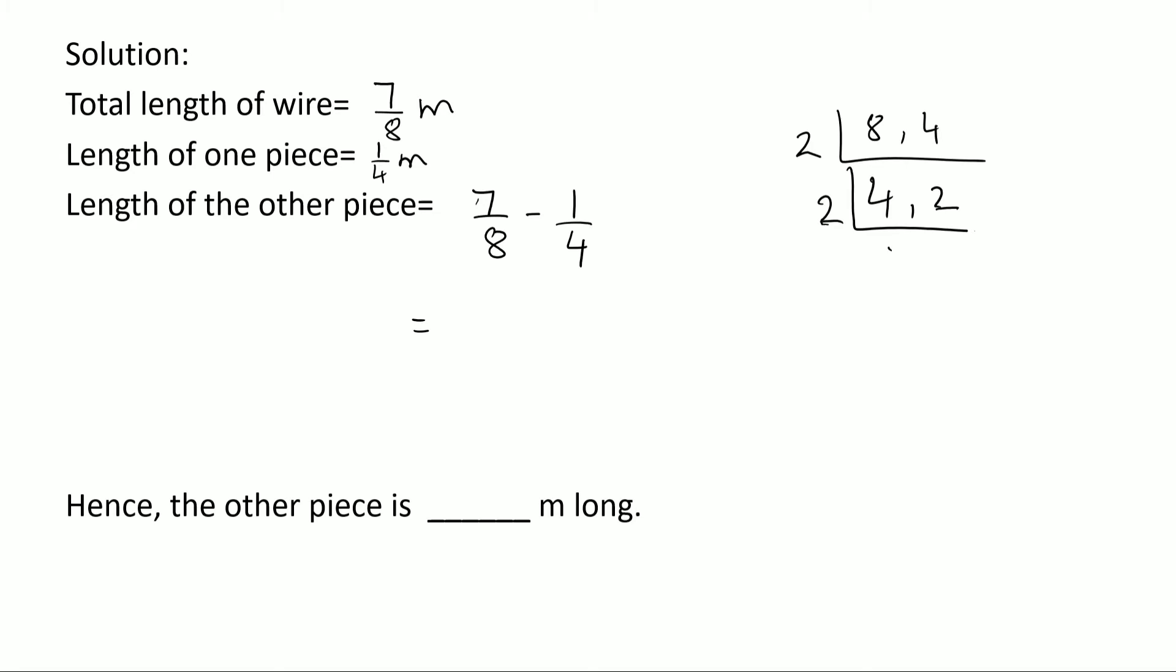2, 1 by 2, and then 2, 1 by 2, 1. So multiply all these: 2 times 4 is 8. 8 is the LCM. Now 7/8 - 8 is already in the denominator. For this one, multiply 2 and 2, so this would become 2/8. 7 minus 2 is 5/8. Hence the other piece is 5/8 meter long.